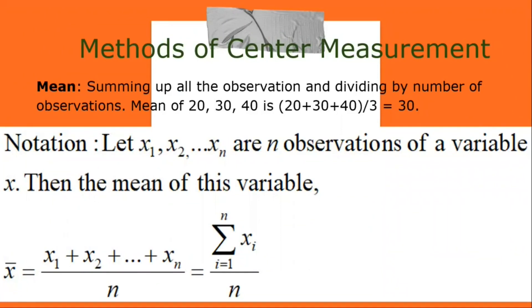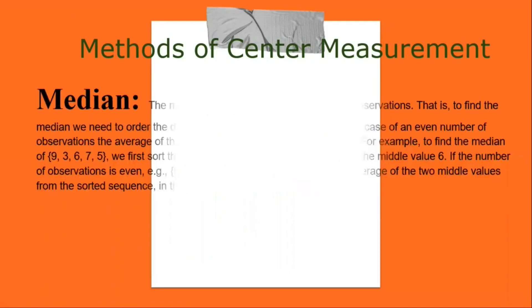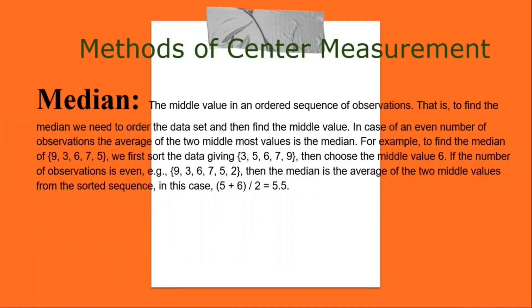Median: the middle value in an ordered sequence of observations. To find the median, we order the data set and then find the middle value. For example, to find the median of 9, 3, 6, 7, 5 — we first sort the data giving 3, 5, 6, 7, 9 — then choose the middle value: 6.